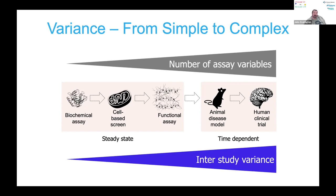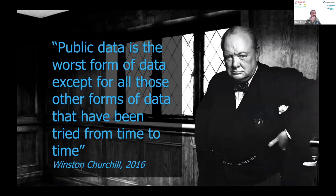The learning from this is: the simpler an experimental system is, the fewer the assay variables, and the smaller the interstudy variance — and consequently the more accurate your model is likely to be for that particular endpoint. One of the awful Occam's razor principles, though, is that there's little point being very good at predicting things in a simple system if the real acid test is understanding how a compound acts in humans. As a final slide — to paraphrase and misdate Winston Churchill, and thereby show the unreliability of data on the internet — 'Public data is the worst form of data, except for all other forms of data that have been tried from time to time.' Thank you very much.